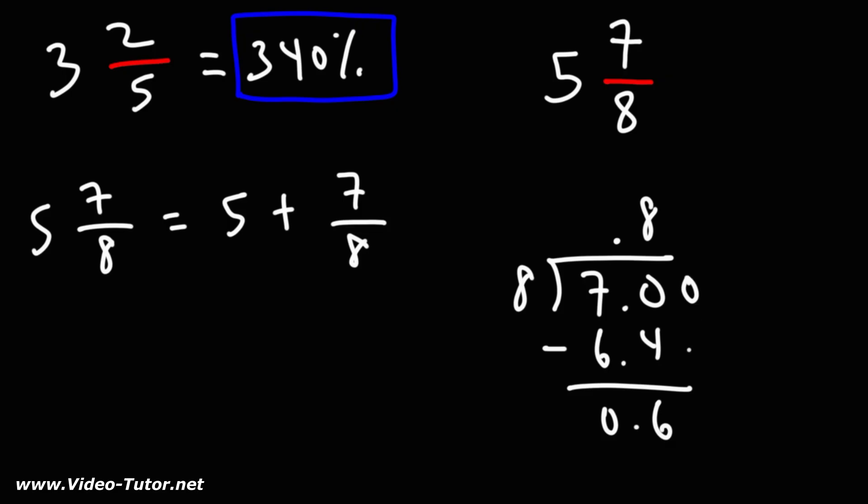Now we're going to add a 0 because 8 doesn't go into 6. How many times does 8 go into 60? 8 goes into 60 seven times. 8 times 7 is 56. And that will give us a 4 remaining.